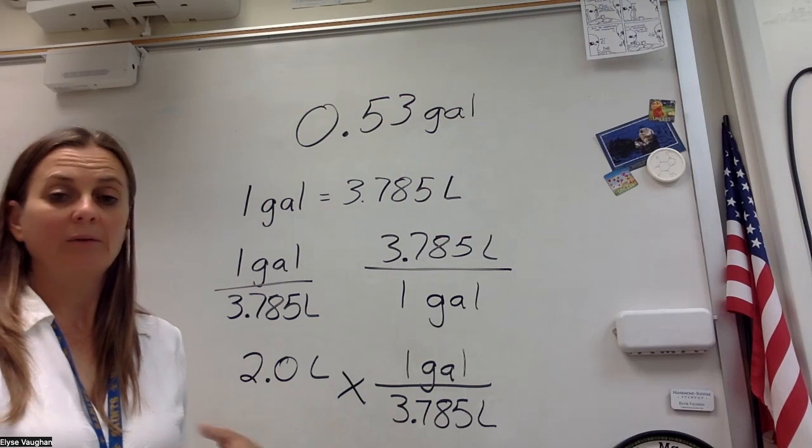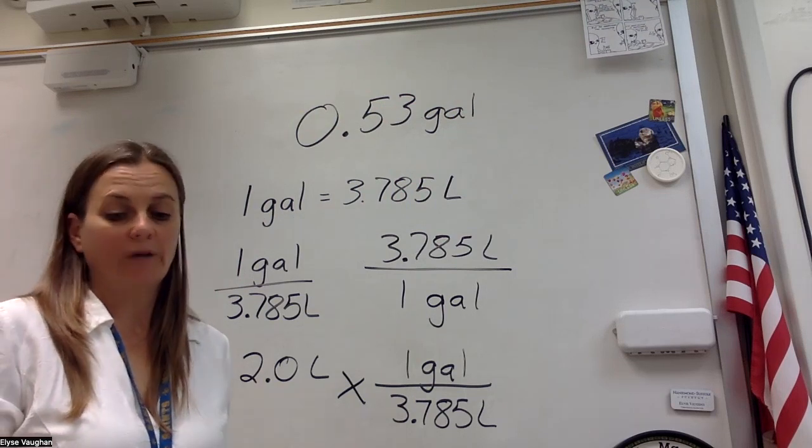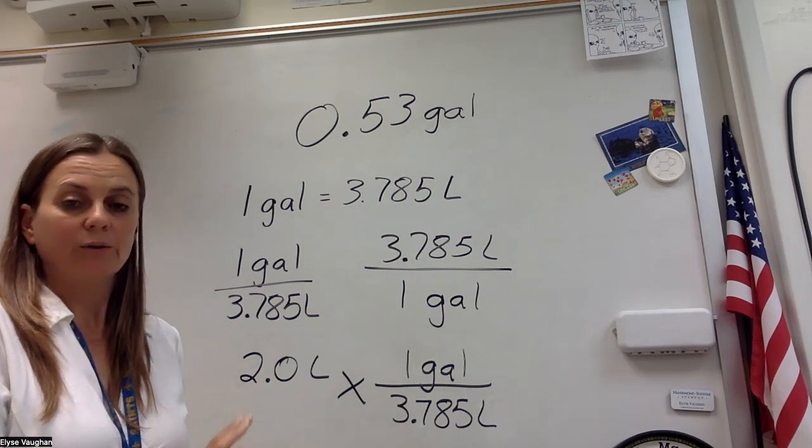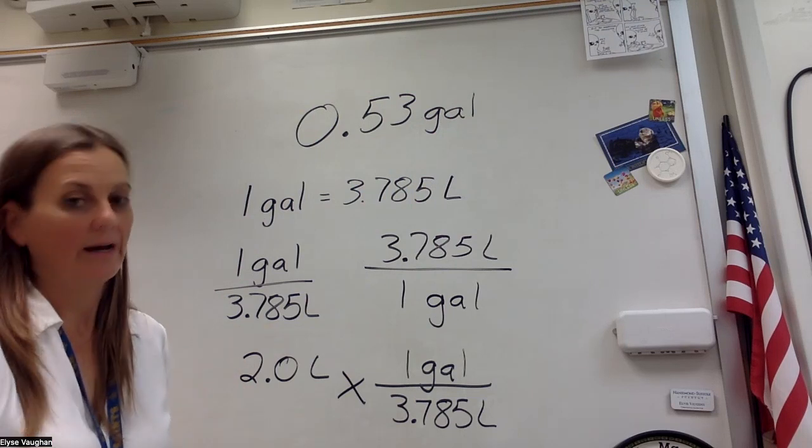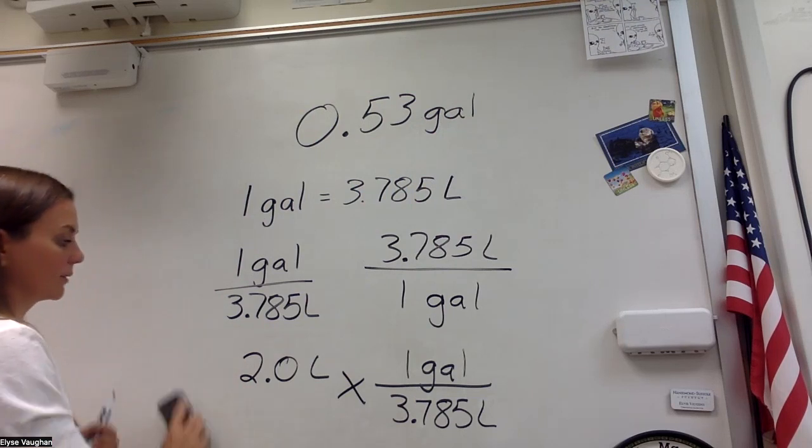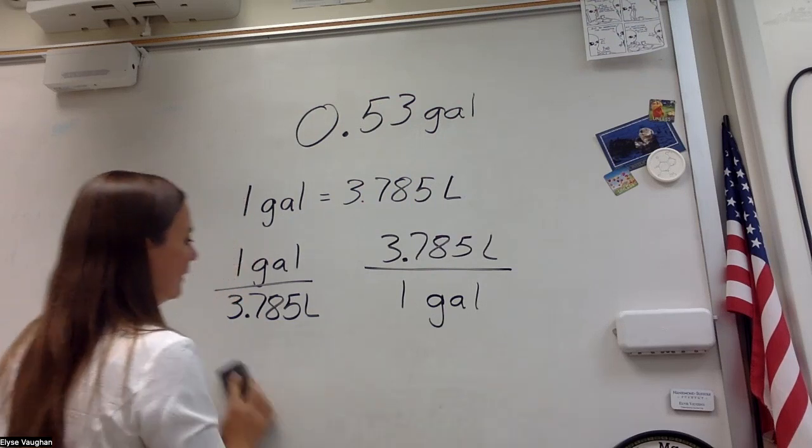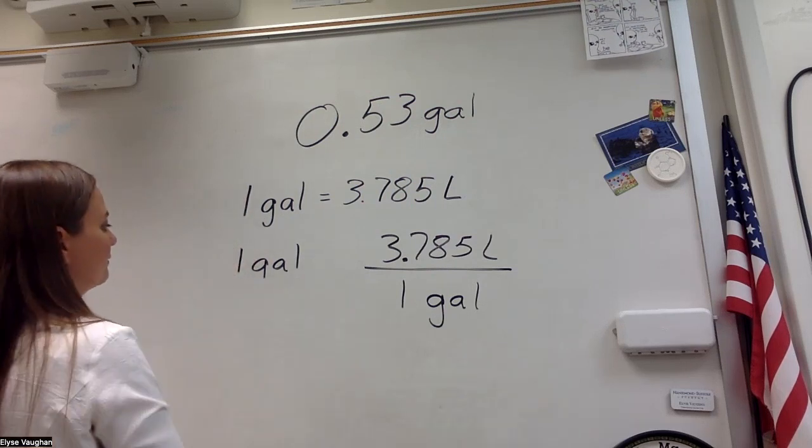Let's look at a different problem. We're going to use the same conversion factors. So we've converted our two liter bottle. We know it's slightly more than half a gallon, 0.53 gallons. Let's take a look at our bucket.